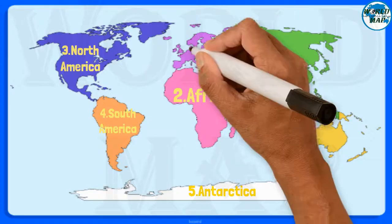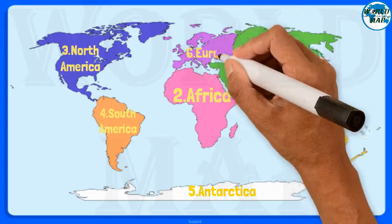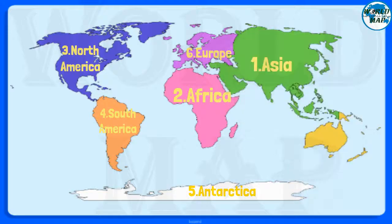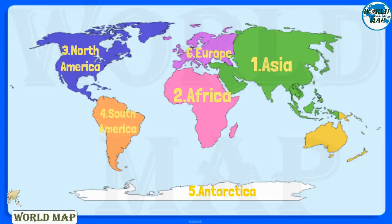Number 6: Europe. It is the sixth largest continent in the world and the third most populous. Europe and Asia are sometimes called Eurasia as they are physically connected, but are considered separate continents due to linguistic and cultural differences. Europe comprises 48 countries.